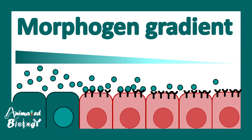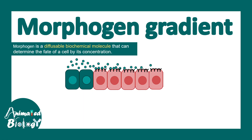In this video we'll talk about the morphogen gradient. This is a fundamental concept in developmental biology and not properly explained anywhere. Morphogens are diffusible biochemical molecules that can determine cellular fate, and this cell fate determination depends on the concentration, magnitude, and timing of the morphogen.